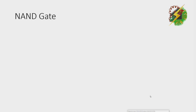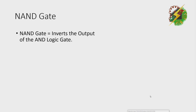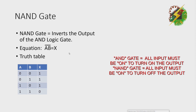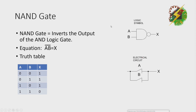Next, we have the NAND gate. NAND gate inverts the output of an AND logic gate. For the equation, we have AB-bar equals X — A times B with a bar over the whole equation. Truth table: for a NAND gate, both inputs must be true to make the AND output turn on, but here you just need to make an inversion of that output. This is the logic symbol for NAND gate, and this is the equivalent electrical circuit.